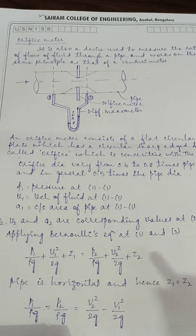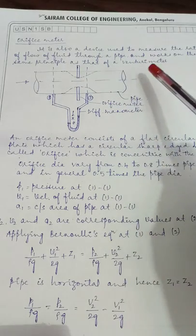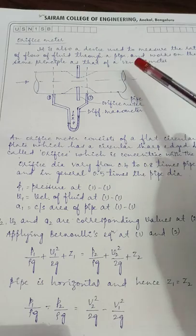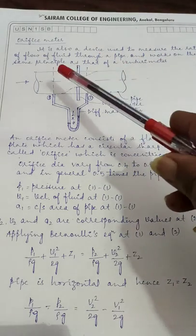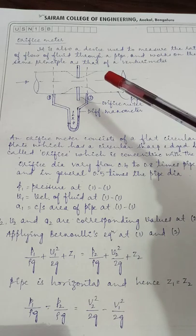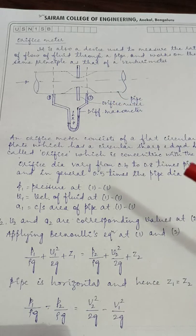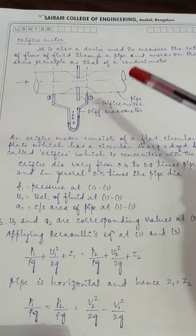Good morning friends. Today we are discussing orifice meter. Orifice meter is also a device which is used to measure the rate of flow of the fluid through a pipe. It works on the same principle as that of the venturimeter. Orifice meter, venturimeter, and pitot tube are the three devices which are working on Bernoulli's equation of motion.